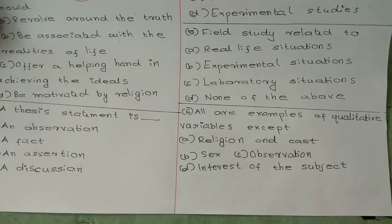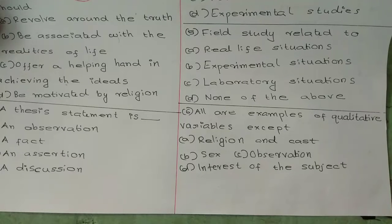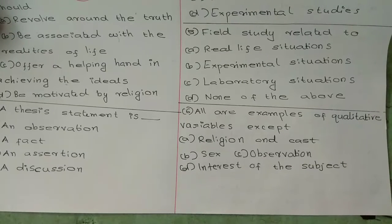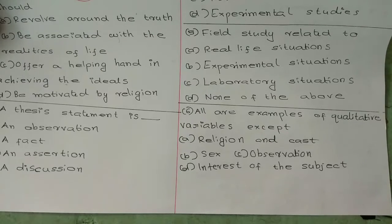Question 6: All are examples of qualitative variables except. Option A: religion and caste. Option B: sex. Option C: observation. Option D: interest of the subject.